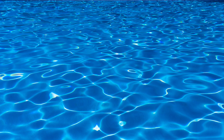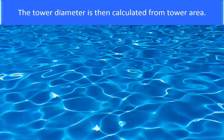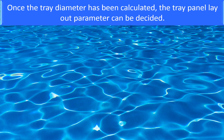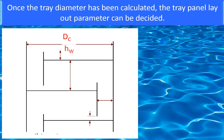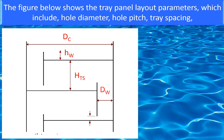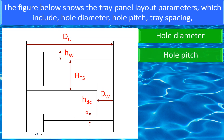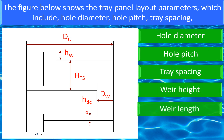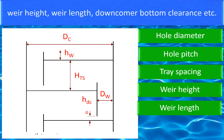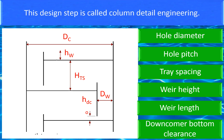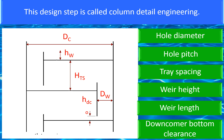The tower diameter is then calculated from the tower area. Once the tray diameter has been calculated, the tray panel layout parameters can be decided. These include hole diameter, hole pitch, tray spacing, weir height, weir length, and downcomer clearance. This design step is called Column Detail Engineering.